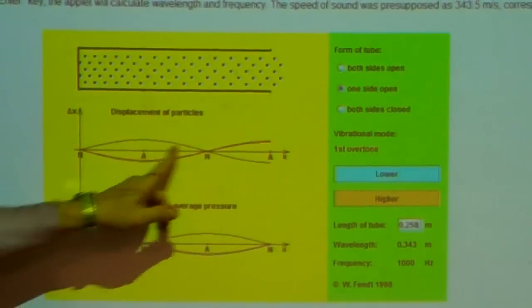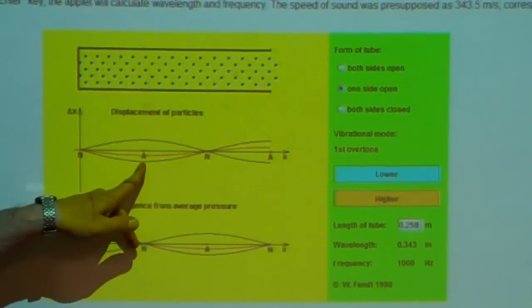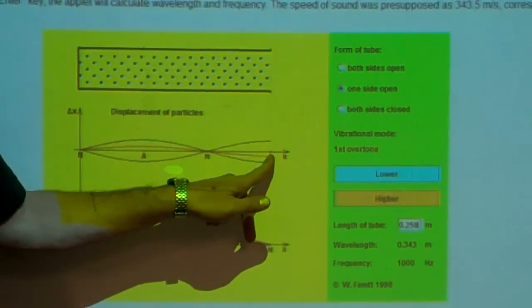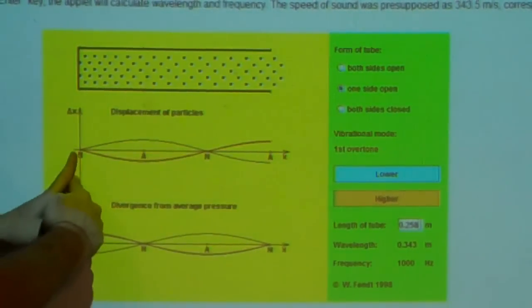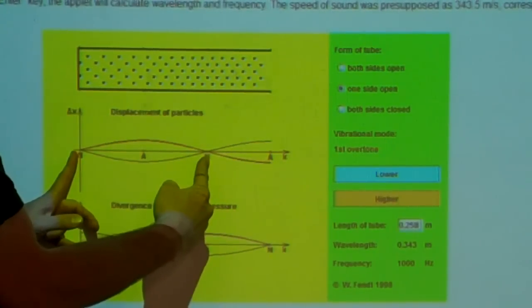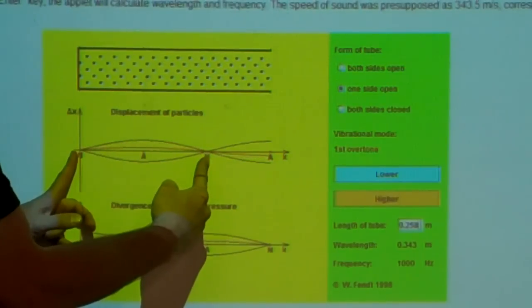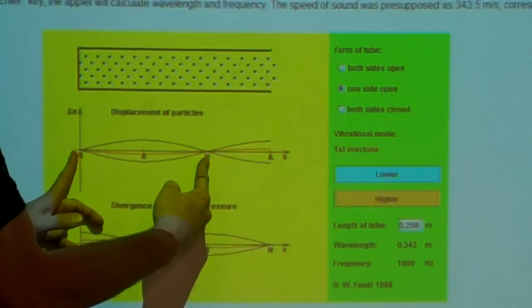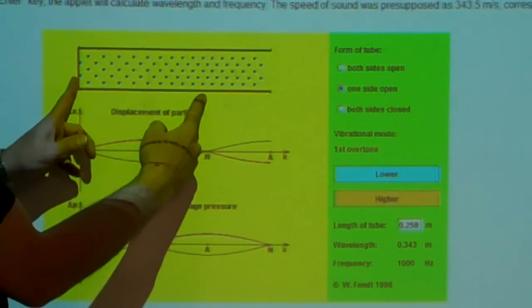This is the way we draw the node, anti-node, node, anti-node. Here's the closed end of the pipe. Here's the open end of the pipe. This is the easy way to draw it. But what is really happening to the air? Don't forget sound is a longitudinal, compressional wave. So this is really what's happening.